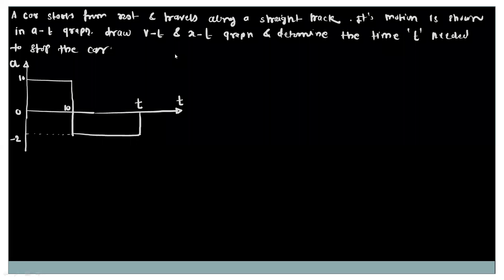Now refer to this problem: a car starts from rest and travels along a straight track. Its motion is shown using the AT diagram, that is the acceleration-time diagram. From this, we have to find out the velocity-time and the position-time graph, and also determine the time t needed to stop the car.